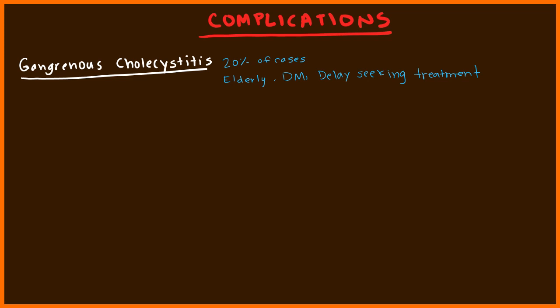Treating cholecystitis quickly is an emergency because of catastrophic complications like gangrene. Patients can also develop sepsis. When I see a patient with gram-negative bacteremia but a normal urine culture, one thing I look at is the gallbladder — that gram-negative may be coming from there. Cholecystitis can eventually lead to sepsis, which carries high mortality. Another complication is perforation — when the gallbladder opens up and releases its contents.